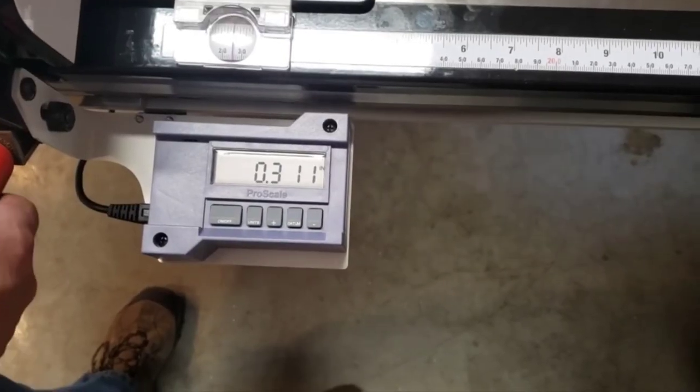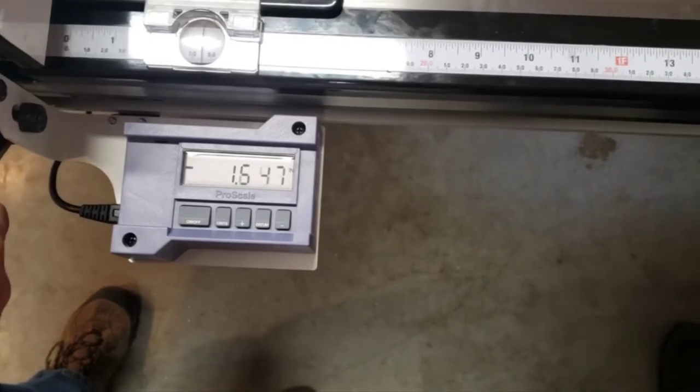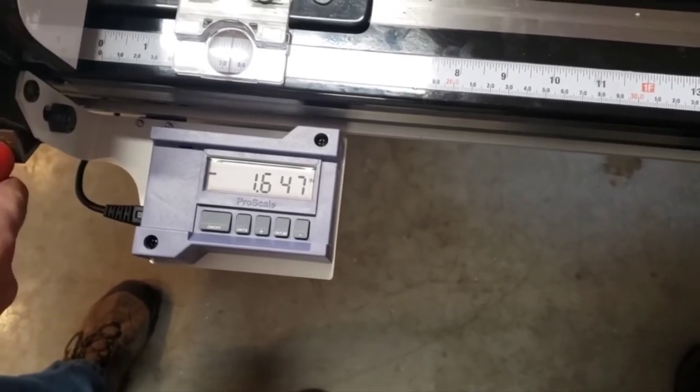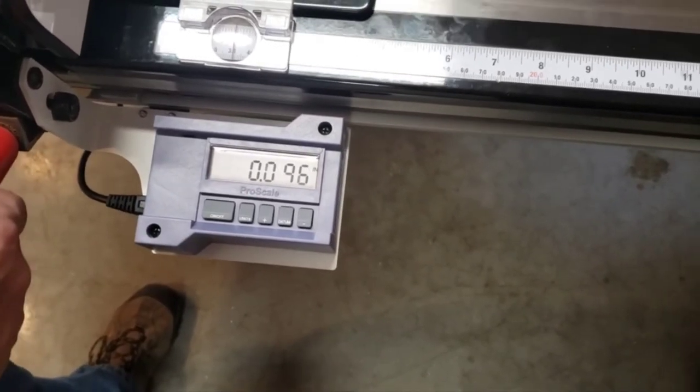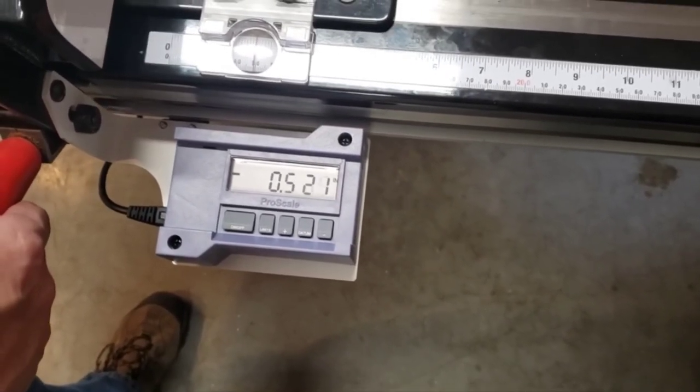Step 30: Verify that the digital readout reads larger numbers when moved from left to right. If it does not, the readout will need to be configured to reverse the reading direction. Please see your user manual for this information.